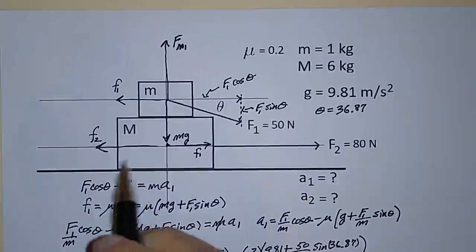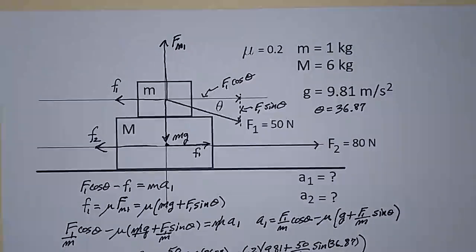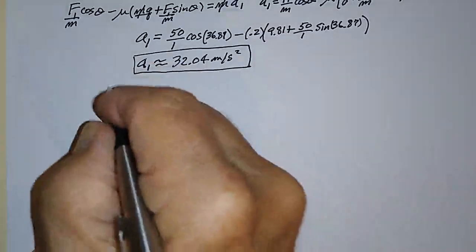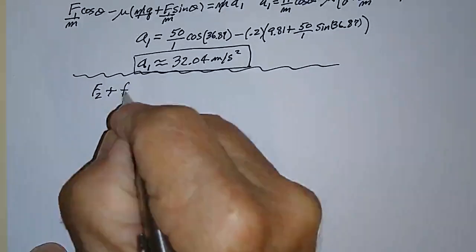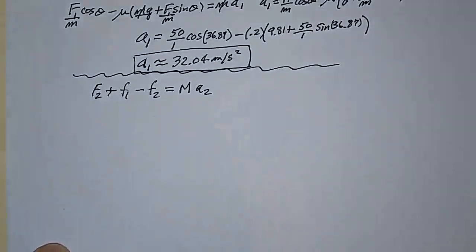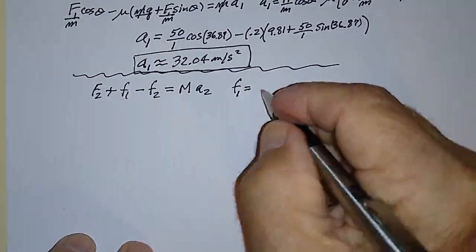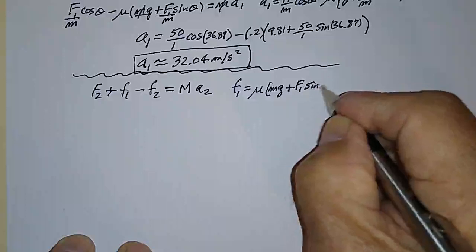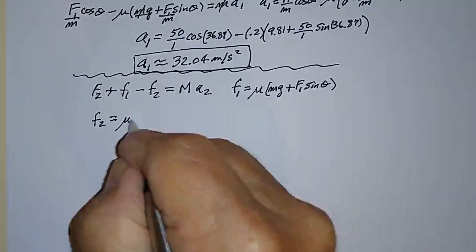Little f2 equals the coefficient of sliding friction times the normal force for that surface. Writing Newton's second law for the bottom block: F2 plus little f1 minus little f2 equals big M times a2. We already know that little f1 = μ times (little mg + F1 sine θ). And little f2 = μ times F_n2.